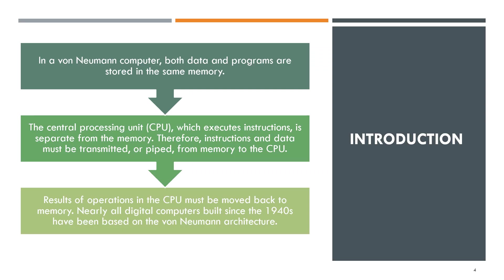In a Von Neumann computer, both data and programs are stored in the same memory. The CPU, which executes instructions, is separate from the memory. Therefore, instructions and data must be transmitted from memory to the CPU, and the results of operations in the CPU must be moved back to memory. Nearly all digital computers built since the 1940s have been based on the Von Neumann architecture.